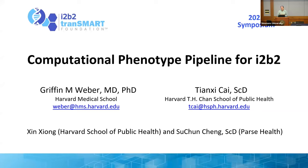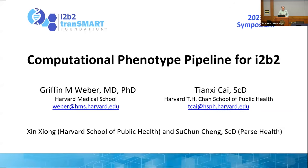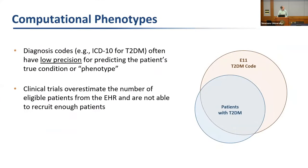Most of the algorithms I'm going to discuss were developed by Tianxi Cai and her team. She's a biostatistician who has been working with us on i2b2 since the very beginning. Getting back to what Sean was saying: diagnosis codes often have low precision for predicting a patient's true condition or phenotype. About half the patients with an ICD-10 code for type 2 diabetes will actually have type 2 diabetes.